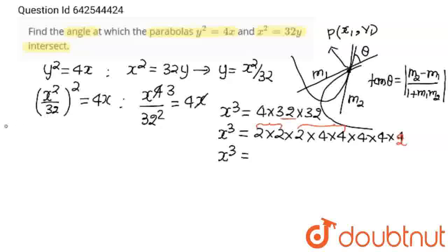If you'll multiply this, you'll get 4096. 4096 is 16³. And from here we'll get x=16.